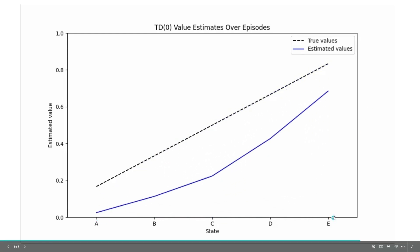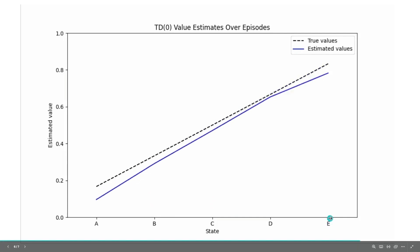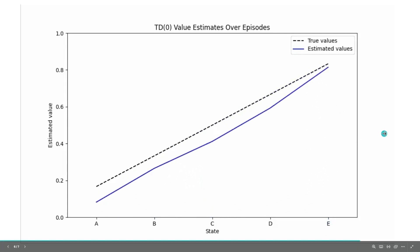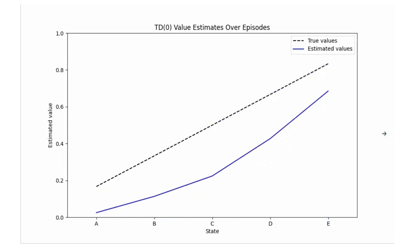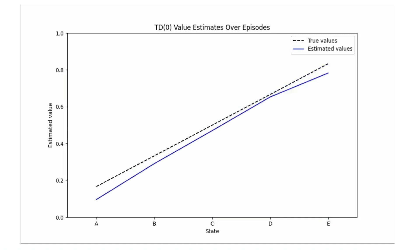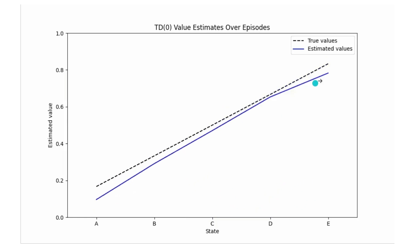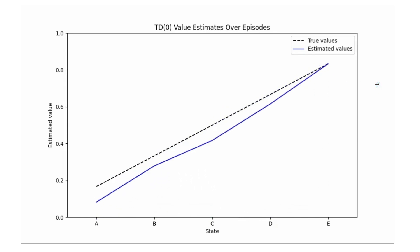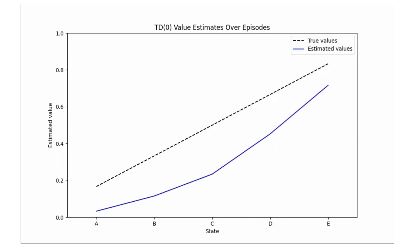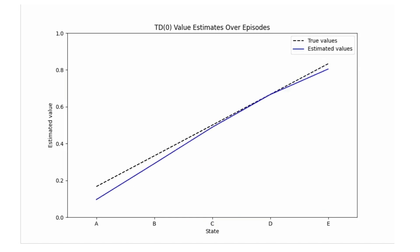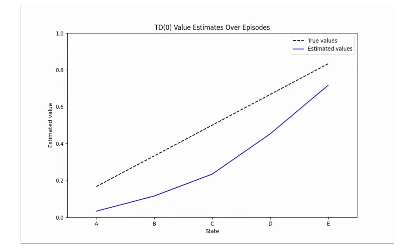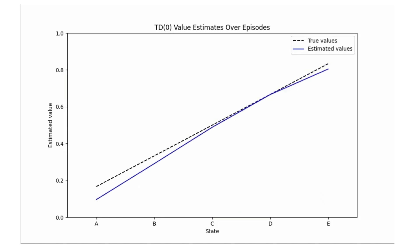The animated GIF shows the TD zero value estimates evolving over episodes: everything starts at zero and gradually rises, with state E showing a sharp early rise. By the end, the estimated values closely match the true values. Thank you for watching — if you have any doubts about temporal difference learning, feel free to put them in the comments.